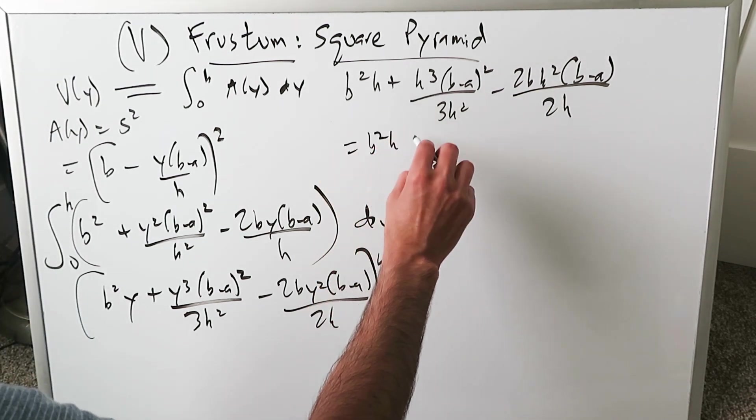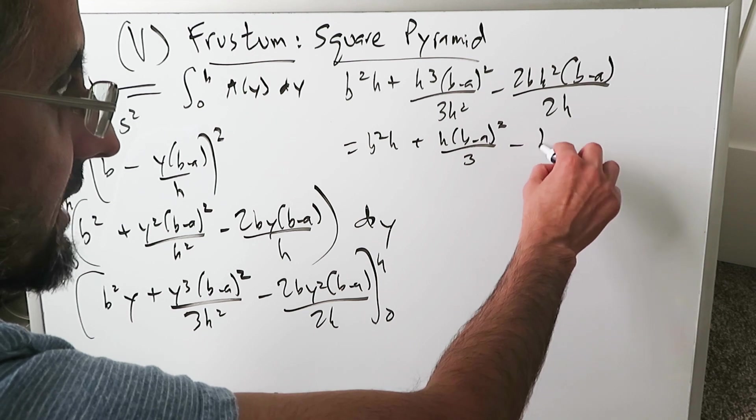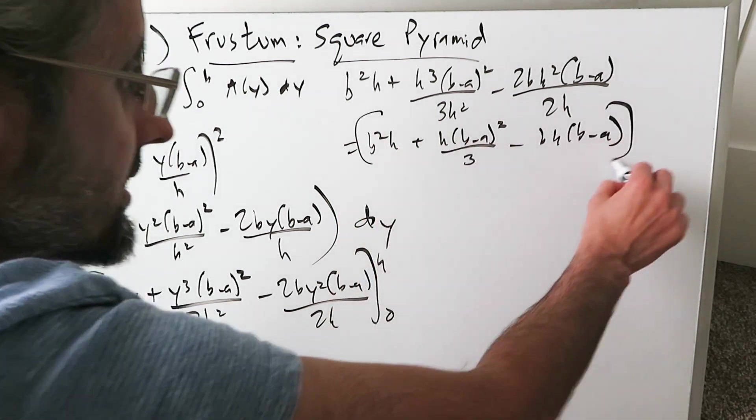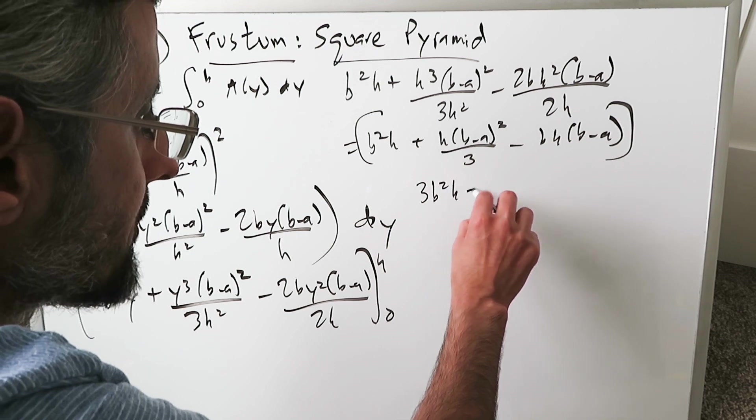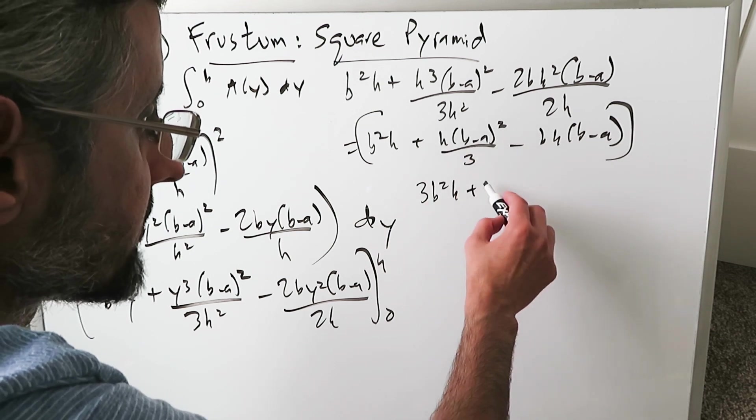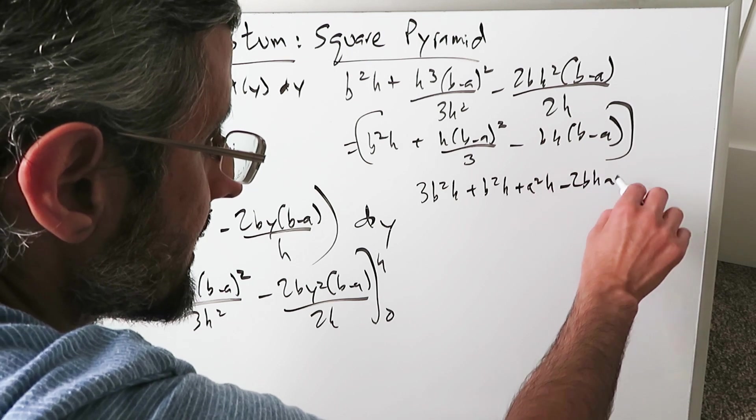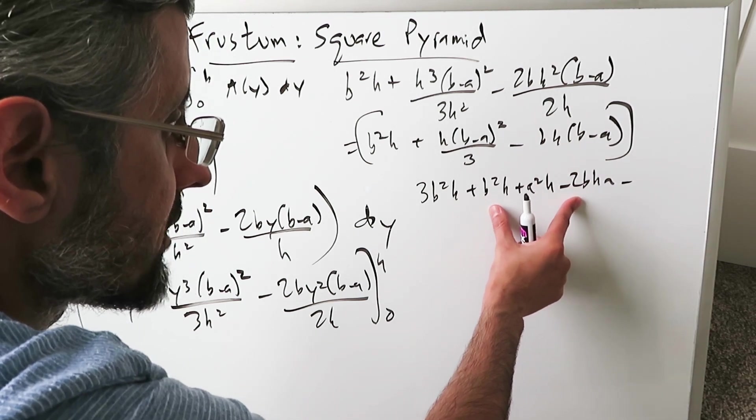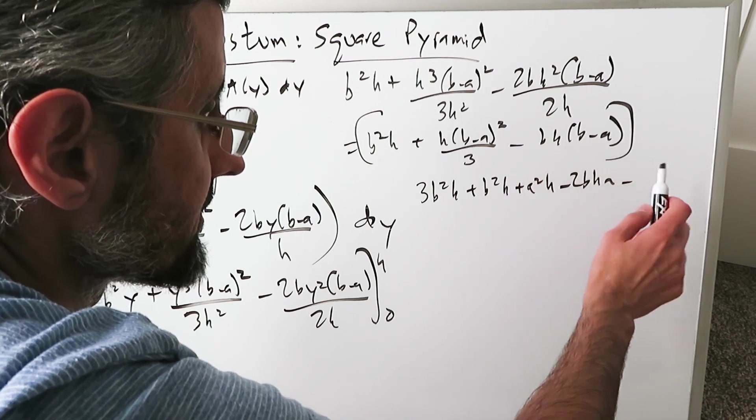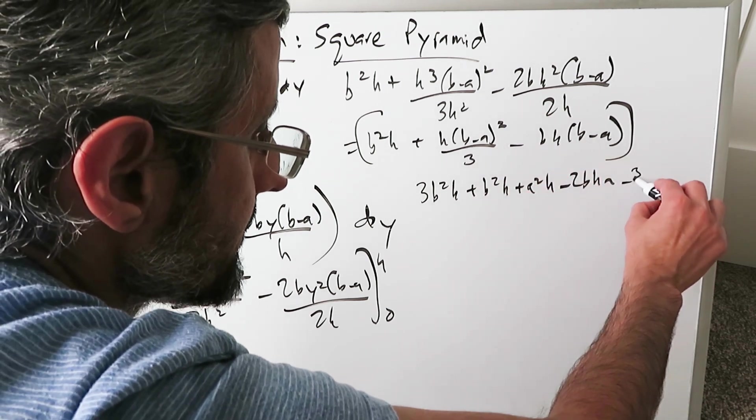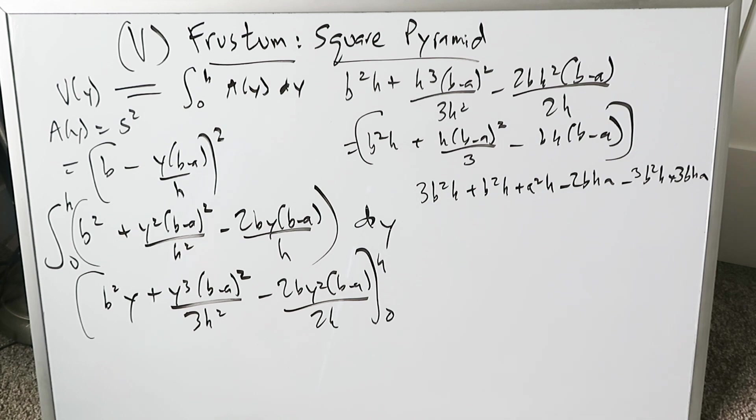Simplify it. You'll have B squared H, H times B minus A whole squared over 3, minus BH times B minus A. Impact everything with a common denominator 3: 3B squared H plus, opening the binomial multiplied by H, B squared H plus A squared H minus 2BHA. The denominator 3: B squared H plus 3BHA.